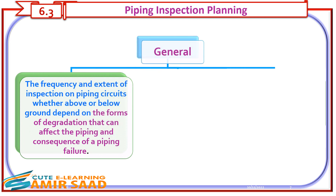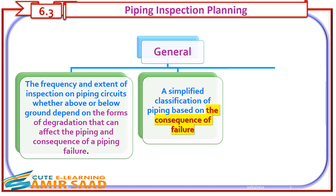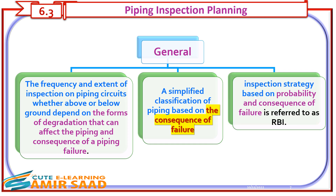Piping inspection planning — General: The frequency and extent of inspection on piping circuits, whether above or below ground, depend on the forms of degradation that can affect the piping and the consequence of a piping failure. A simplified classification of piping based on the consequence of failure — inspection strategy based on probability and consequence of failure — is referred to as RBI.